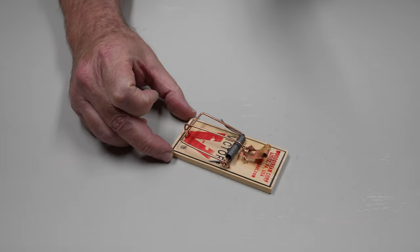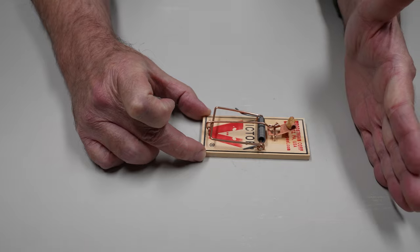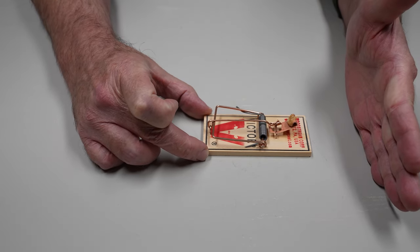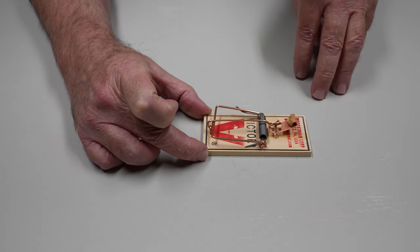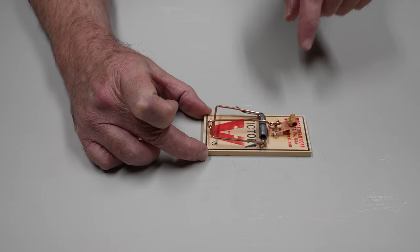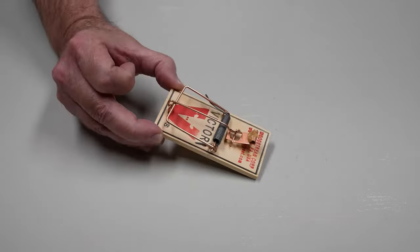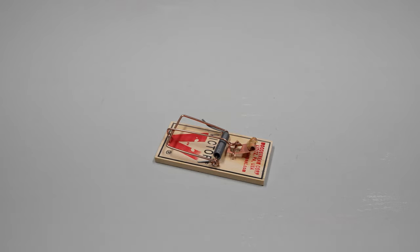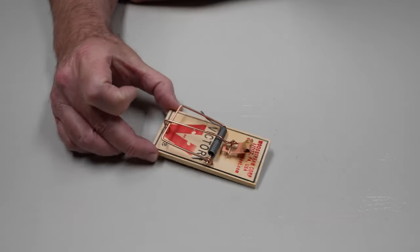But remember, if you're going to sit it along a wall, it's going to go perpendicular to the wall like this. So as if the mouse is running down along the wall, he'll see this from either direction. I would suggest putting a couple of these out, even if it's two or three couple feet apart under your kitchen sink or wherever you think that the mice are.